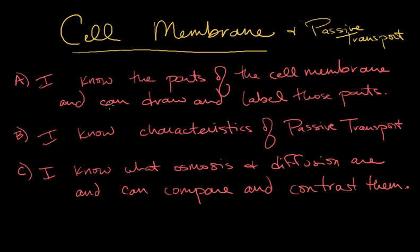You're going to jot down that you have these three learning targets. You know the parts of the cell membrane. You can draw and label these parts. You know the characteristics of passive transport and you know what osmosis and diffusion are and can compare and contrast them.